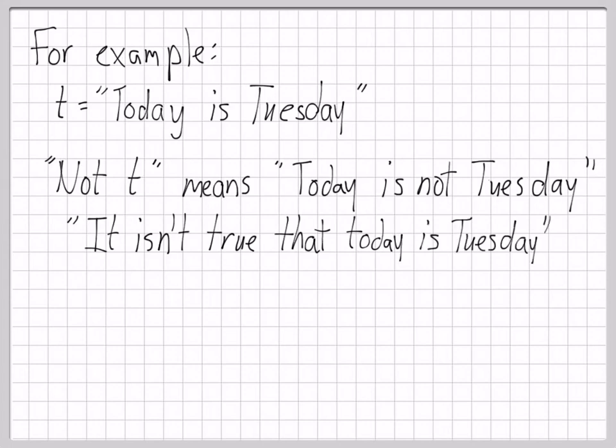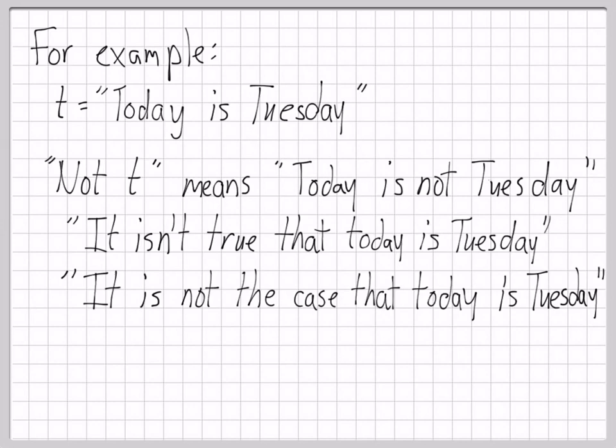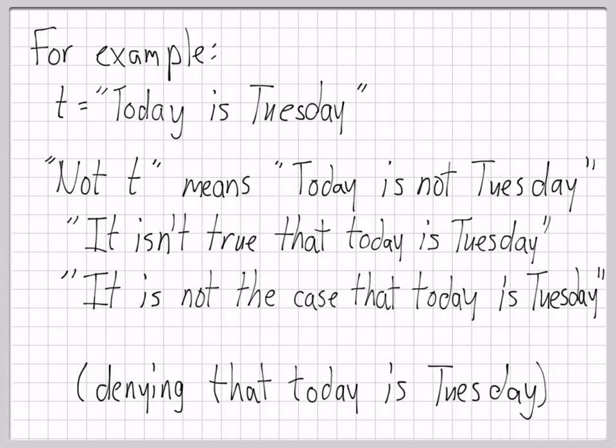Another way to write that is it isn't true that today is Tuesday. That's a more literal way of writing today is not Tuesday. You can also write it is not the case that today is Tuesday. All of these have the same logical form. All of them are denying that today is Tuesday.